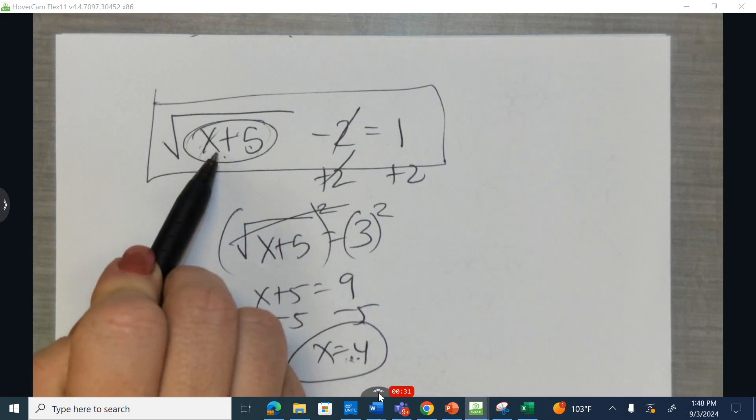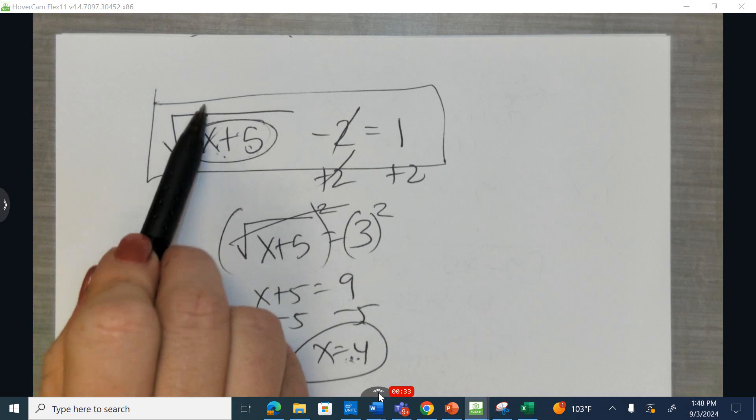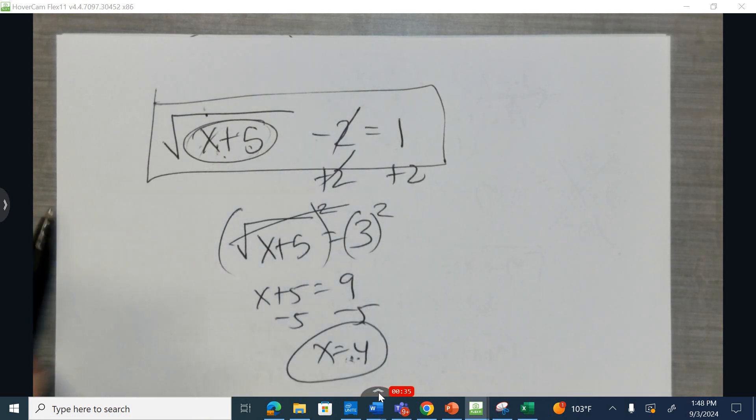4 plus 5 is 9. Okay, that's greater than 0. And the square root of 9 is 3. 3 minus 2 is, in fact, 1. This works.